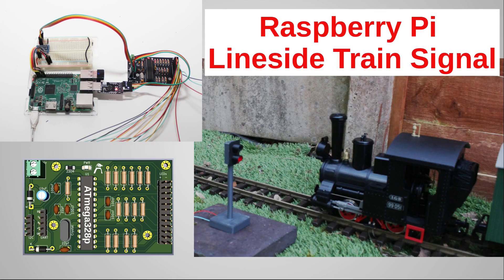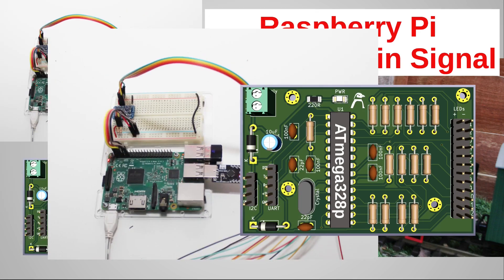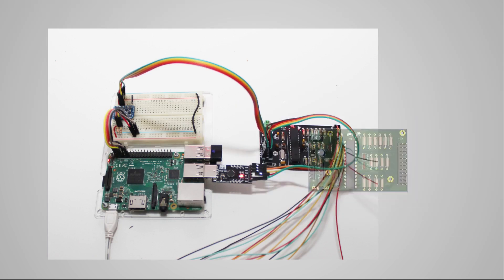This video is going to show you how you can include traffic signal automation in a custom electronics project based around the ATmega328p microcontroller, which is the same integrated circuit as the Arduino Uno uses, and a Raspberry Pi single board computer. This is the final iteration of my model railway custom PCB design project, which I've been covering for a while, including support for more LEDs and adding I2C communication with the Raspberry Pi, including in a model railway signal automation controlled by a Raspberry Pi.